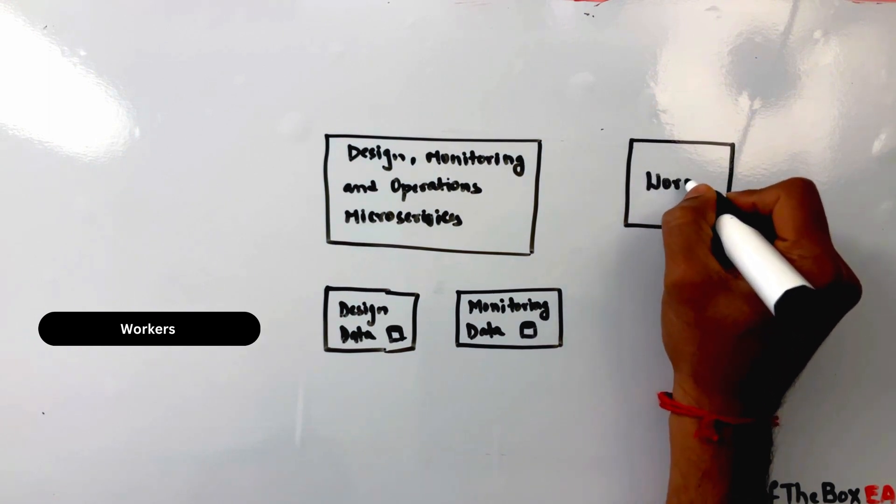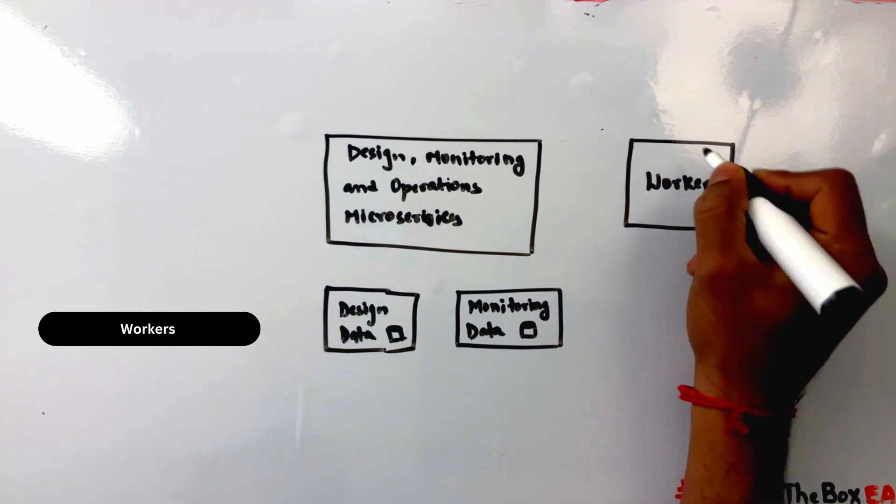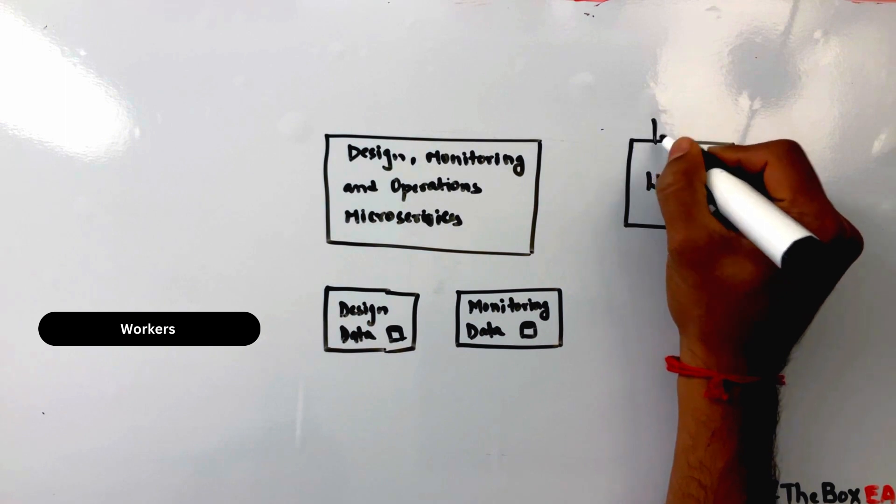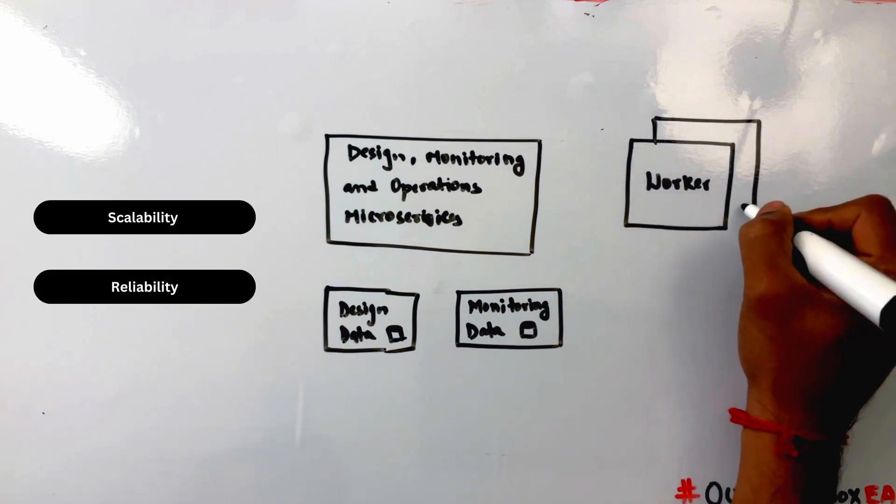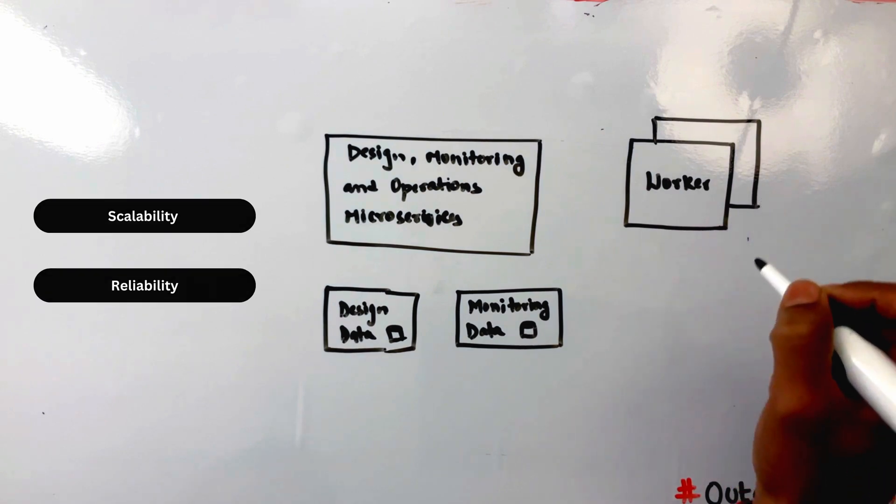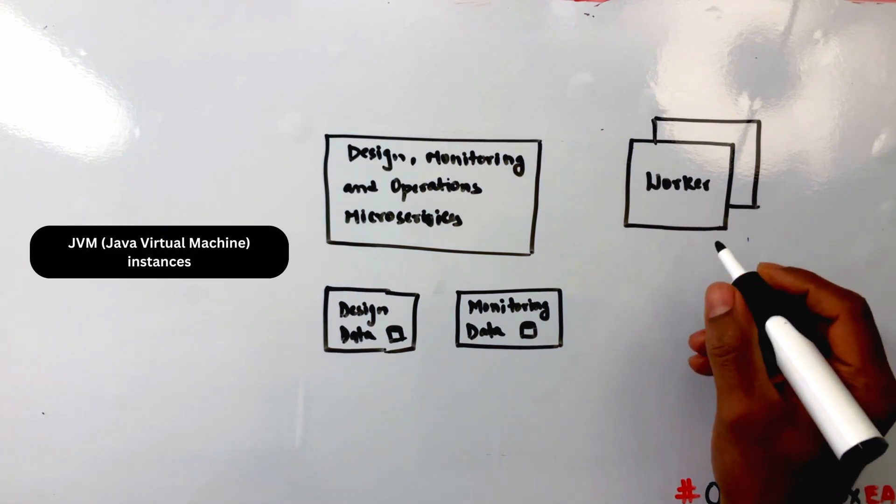The number of workers in SAP CPI can be increased or decreased based on the load requirements. Each worker runs on a separate virtual machine, providing scalability and reliability to the integration flows. Workers in SAP CPI are JVM Java virtual machine instances.